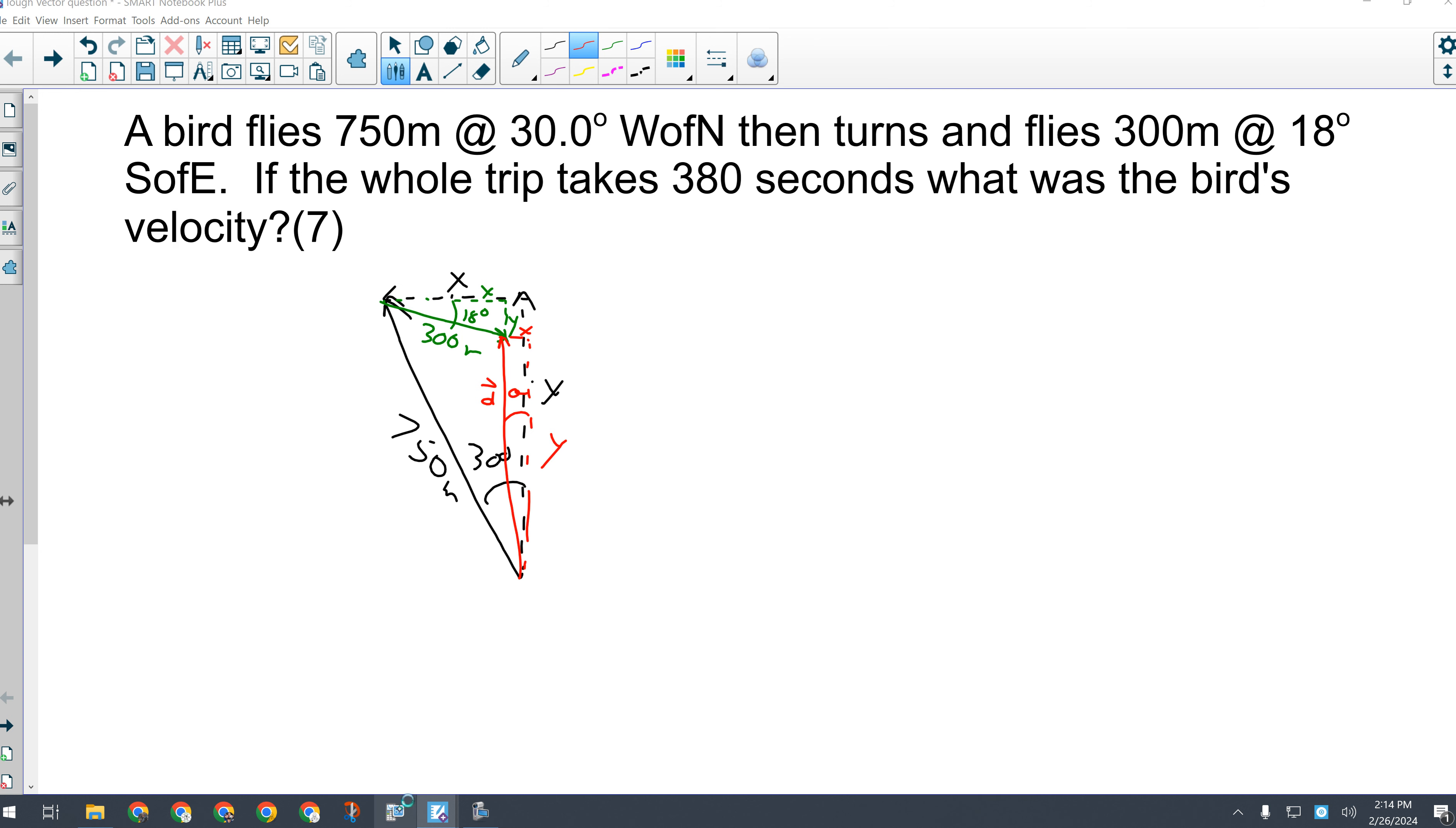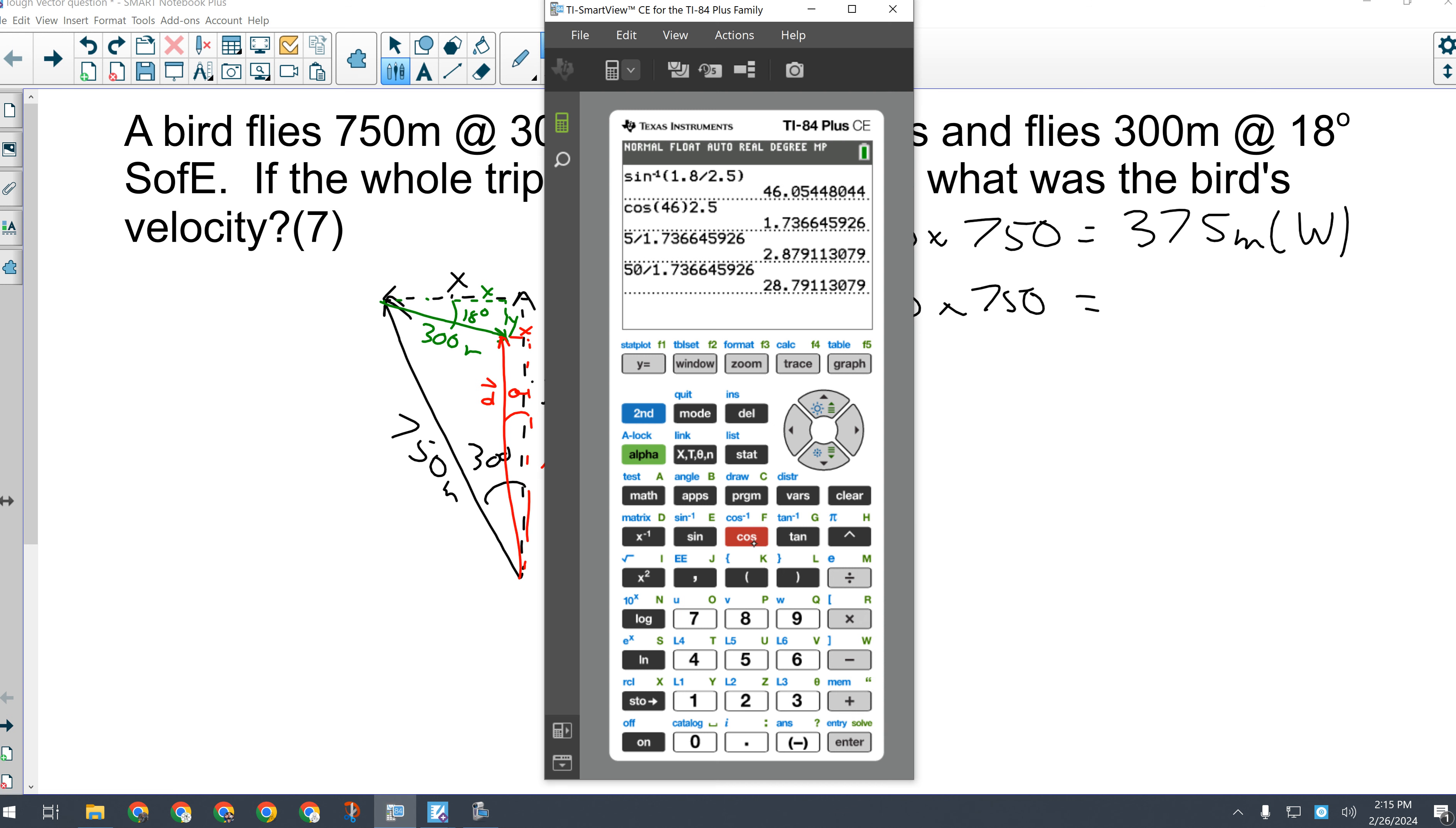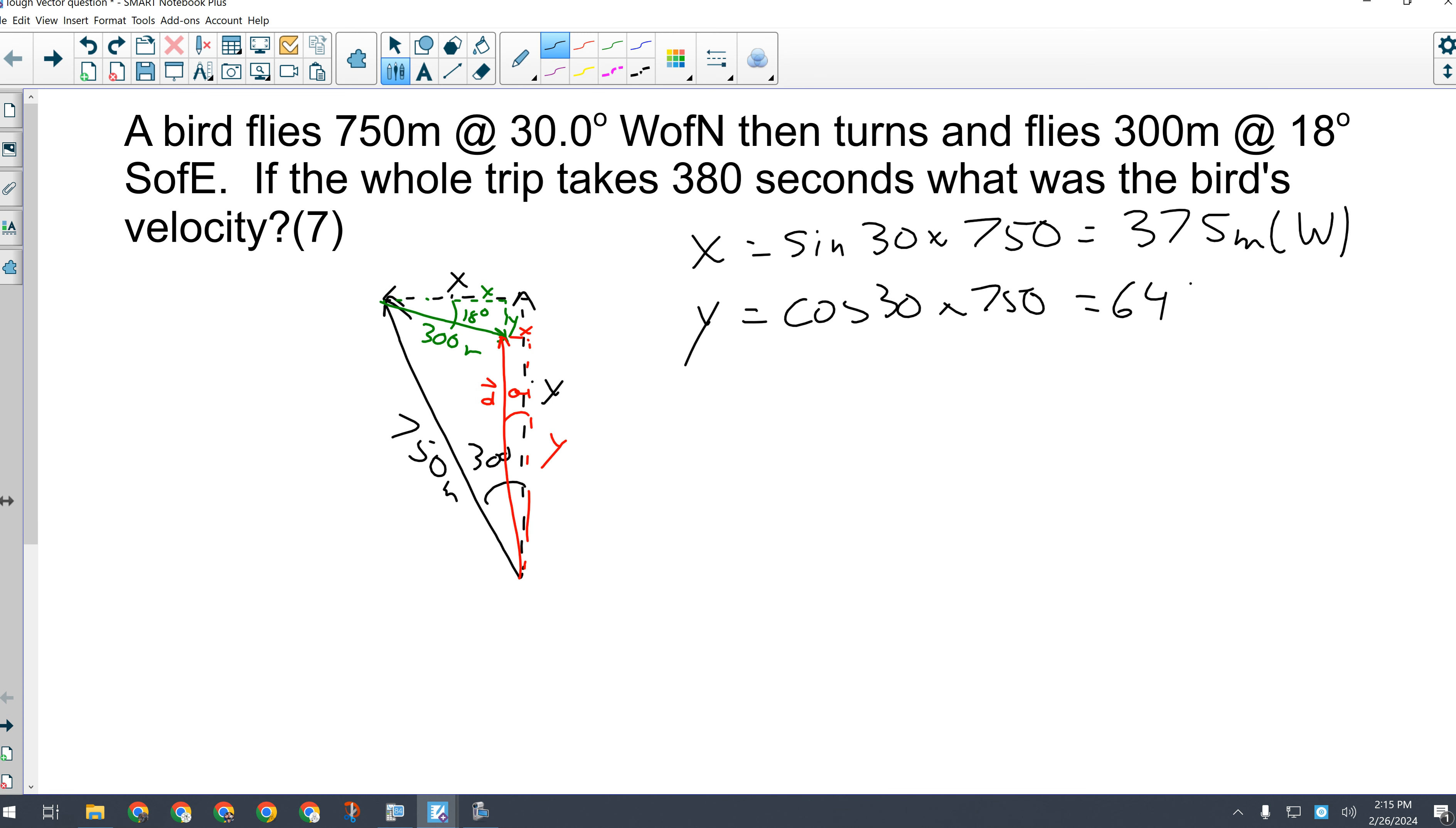So I've got to find black x first. It is the opposite side, so I'm going to go sine of 30 degrees times the hypotenuse, 750 meters. That's going to give me that that side is 375 meters west. For the y component, it's the adjacent side, cos of 30 times 750. So that side is 649.52 meters north.